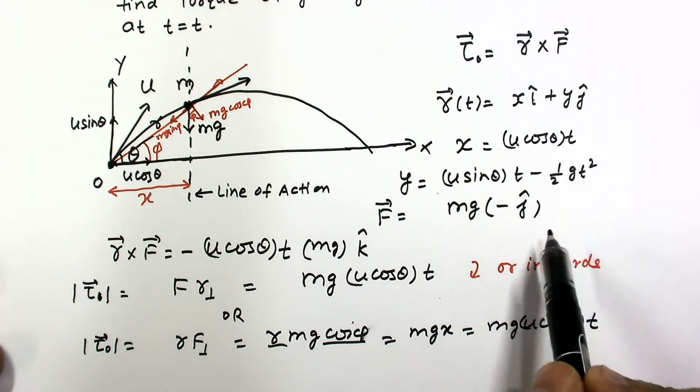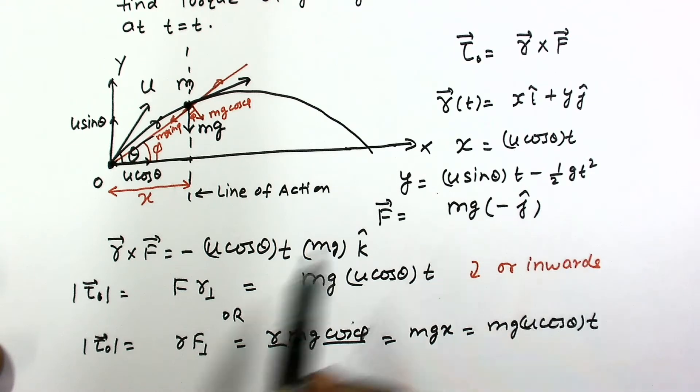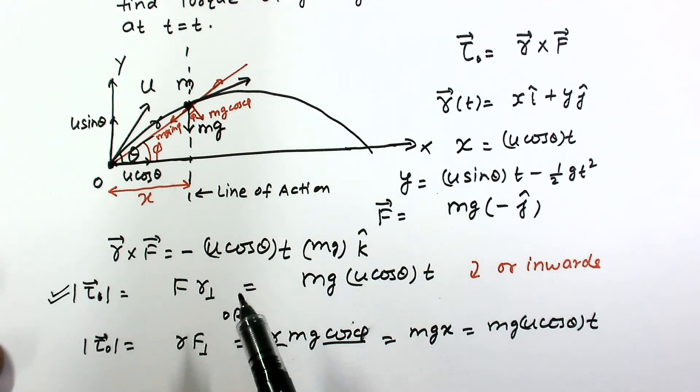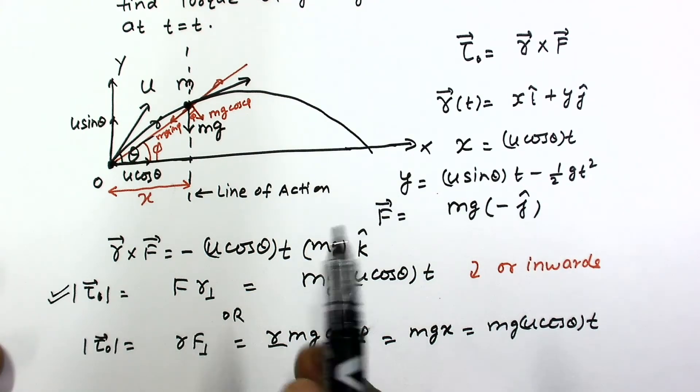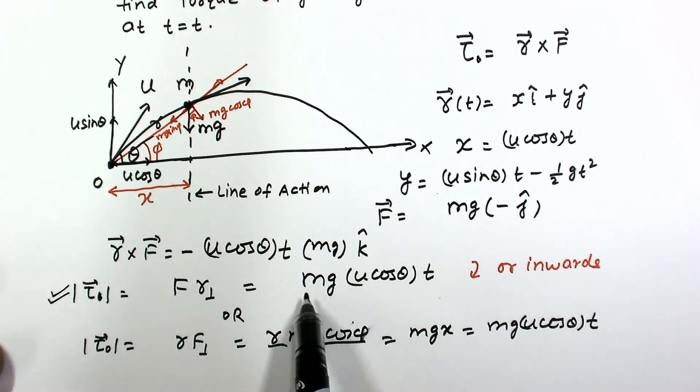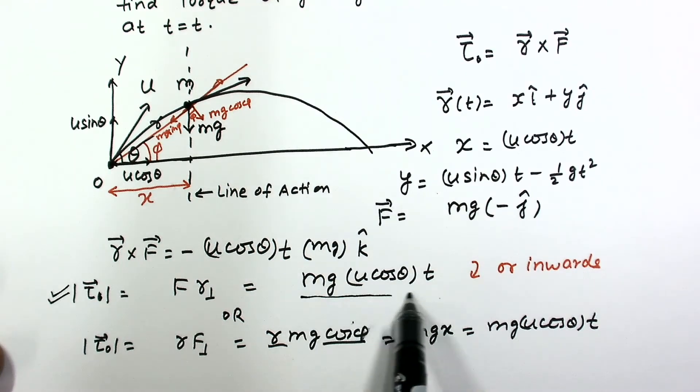We can see that the rod/visual method is the best approach here. This method is best for calculation because it involves the least computation.